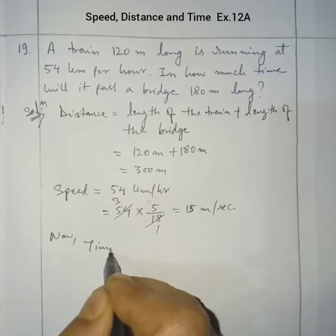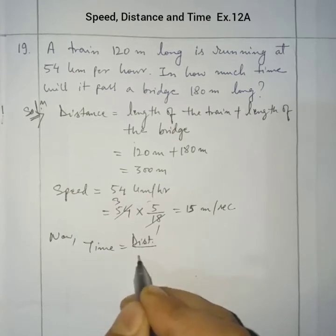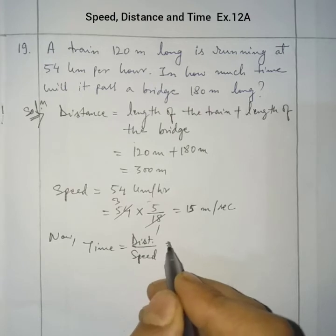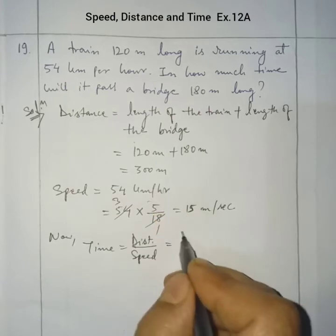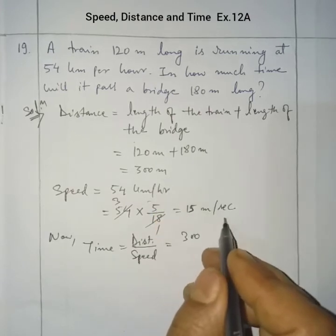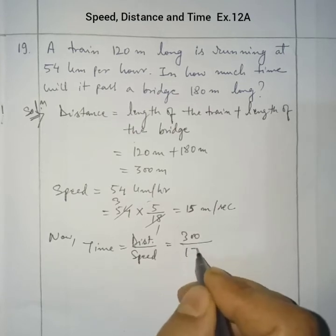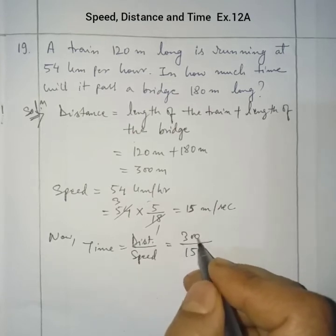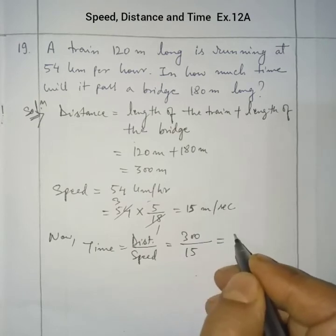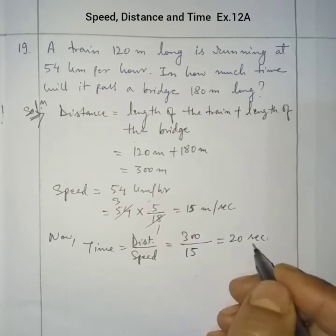Time equals distance divided by speed, so 300 meters divided by 15 meters per second equals 20 seconds. So the time taken is 20 seconds.